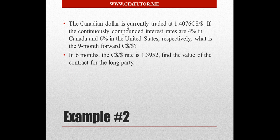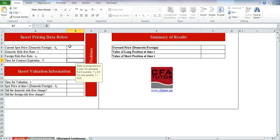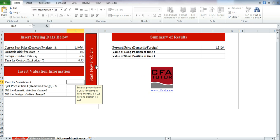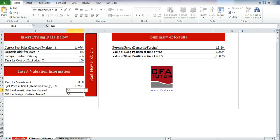Moving to the second example — it uses the same information, except we now assume continuous compounding and are finding the 9-month forward instead of the 1-year forward. We enter 1.4076 as the spot rate, domestic risk-free rate 4%, foreign risk-free rate 6%, time to expiration 9/12 = 0.75, time of valuation 0.5, and spot price at that time 1.3952.